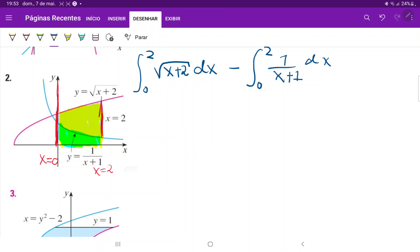So for the first one, I'm just going to do a simple u substitution, where u is equal to x plus 2 and du is equal to dx. And I'm going to do the same for the other one, except I'm going to say that u is equal to x plus 1 and then du is just equal to dx.